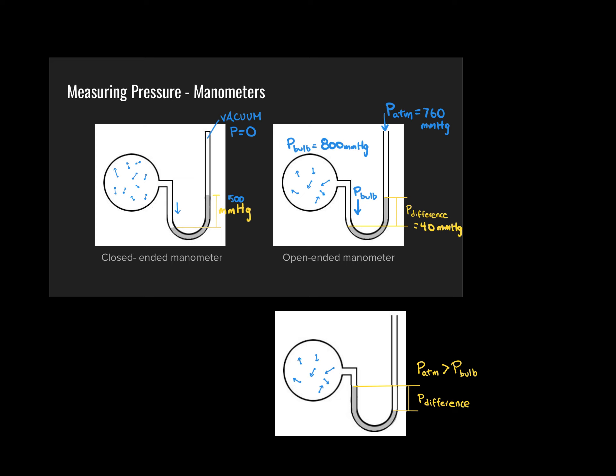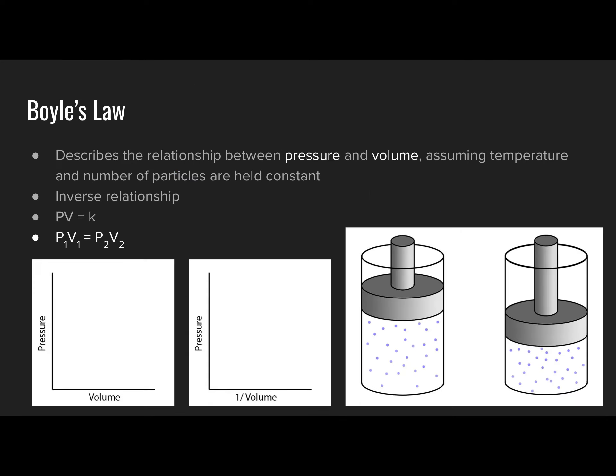At this point we're going to move into a discussion of the relationships between the variables affecting gas behavior. This will be a couple days of first-year chemistry compacted into one lecture, so we'll move fairly quickly. The first relationship is Boyle's Law, which describes the relationship between pressure and volume of a gas phase system while holding temperature and number of gas particles constant.